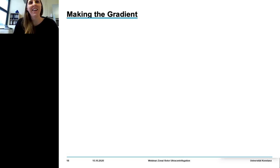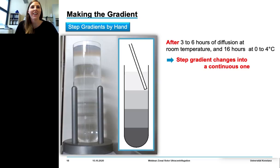Thanks Alexander, and welcome from the lab. The whole story starts with constructing a density gradient in a centrifuge tube. The most widely used method is an overlayering method: we start with the dense solution and layer successively lower densities on top from a pipette, ending up with a discontinuous gradient with a total volume of 35 milliliters.